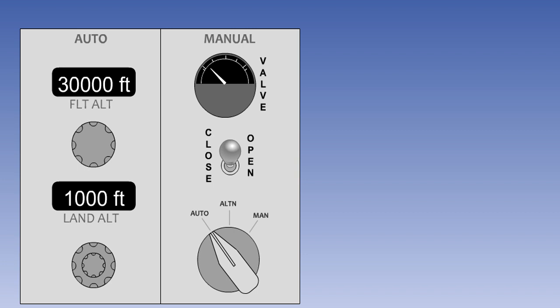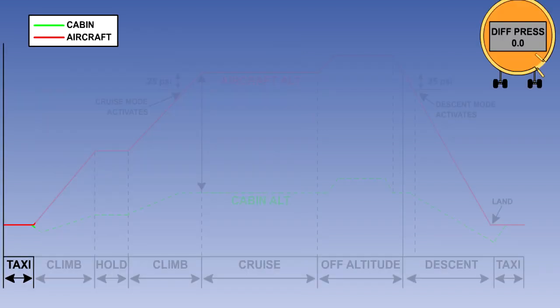We will now take a look at a typical flight to see how a typical pressurization system will operate in auto mode. During preflight preparation, the pilot will set the expected cruise altitude and the landing airfield elevation. In our example, the aircraft will be cruising at 30,000 feet before landing at an airfield with a pressure altitude of 1,000 feet. With the aircraft on the ground, the operating controller will hold the outflow valve fully open. When the pilot opens the thrust levers for takeoff, the controller will signal the outflow valve to move towards closed, pre-pressurizing the aircraft cabin to a small differential pressure of approximately 0.1 psi. This ensures that the transition to pressurized flight will be gradual and that there will be no surges of pressure on rotation.